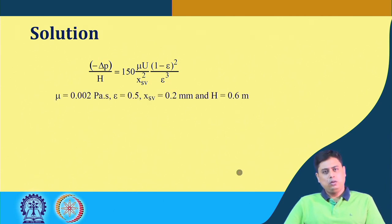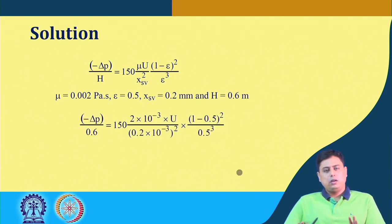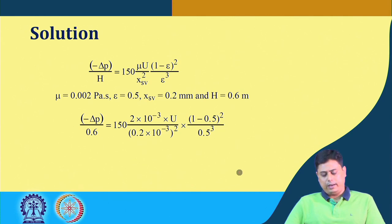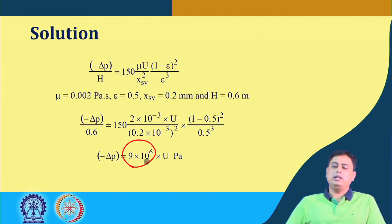The mu value is known, epsilon is given, the particle diameter is given. If we now replace these numerical values, we can find that the relation between delta P and U is linear — y equals m times x — and this is the slope of this linear line.